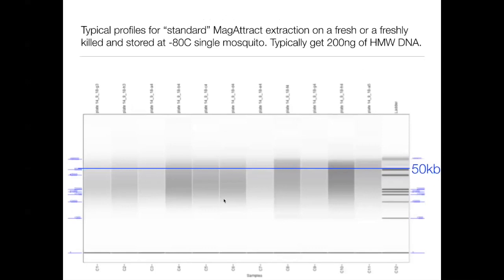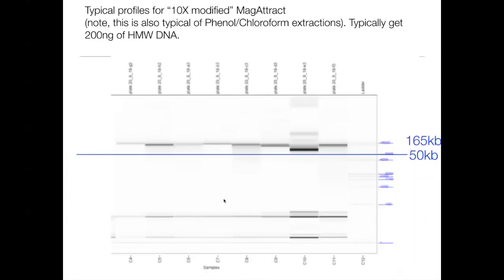This femtopulse evaluation — sorry it's a bit blurry — shows the blue line indicating a 50 KB molecule length. This is the standard profile we see from the standard MagAttract extraction, using either fresh mosquitoes or mosquitoes stored immediately at minus 80 so DNA hasn't degraded. We typically get about 200 nanograms of high molecular weight DNA per mosquito. The profile is quite a smear with no real high molecular weight molecules — the bulk is hanging around 50 KB.